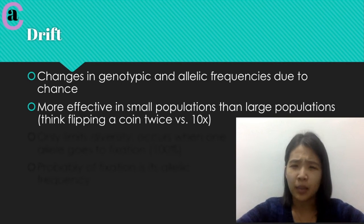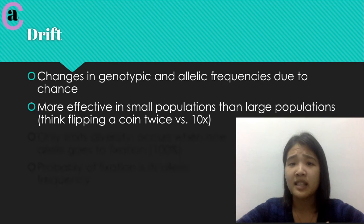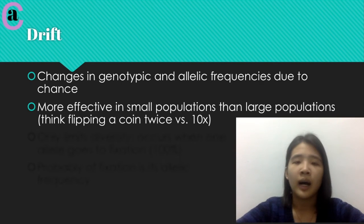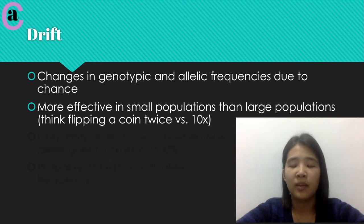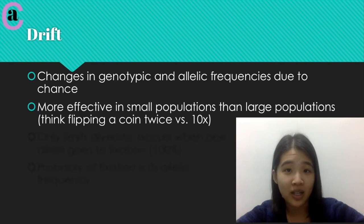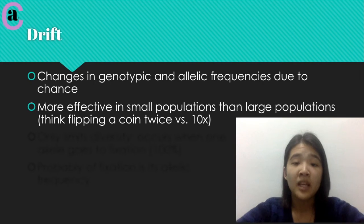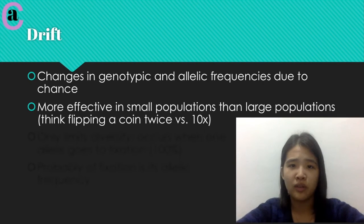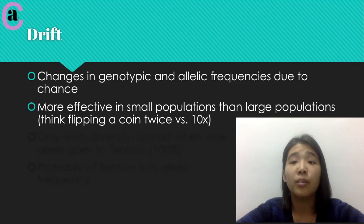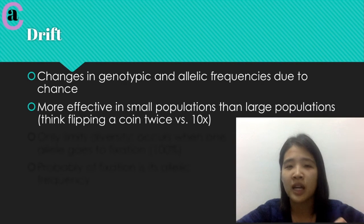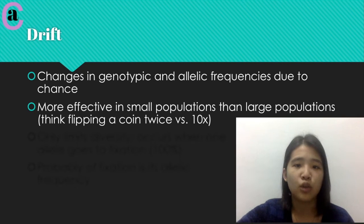It is a very common example, but if you flip a coin twice, chances are you are going to get two heads or two tails — about a 50% chance that you will get one of those instead of one head and one tail, which you would expect for a regular coin. However, if you flip the coin ten times, a hundred times, or a thousand times, you are most likely going to get a much closer percentage than if you just flip the coin twice.